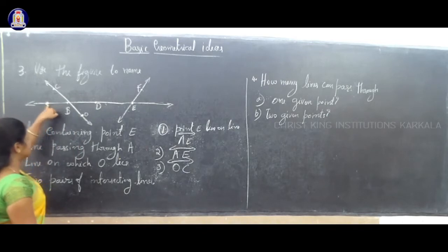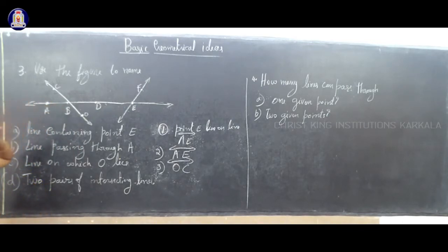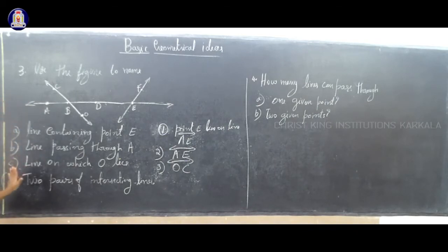Point A is passing through a line, that is line AE. You have to observe the figure, see the figure, and answer the following questions.